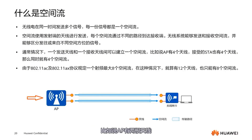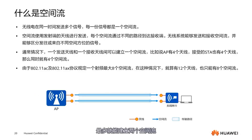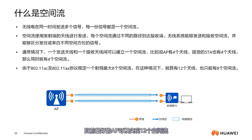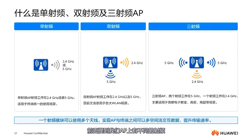Another concept is spatial streams. Our different devices have different numbers of antennas. For example, an AP has two antennas — when transmitting data, one transmitting antenna corresponds to one receiving antenna, establishing two connections. Because we connect through the air, information transmits through space, so it's called a spatial stream. With two antennas, you can establish up to two spatial streams. In Wi-Fi 6, the best APs can achieve 12 spatial streams. Due to 802.11ac and 802.11ax protocols, a single radio frequency can support up to 8 spatial streams, so even with 12 antennas, you can only have 8 spatial streams.